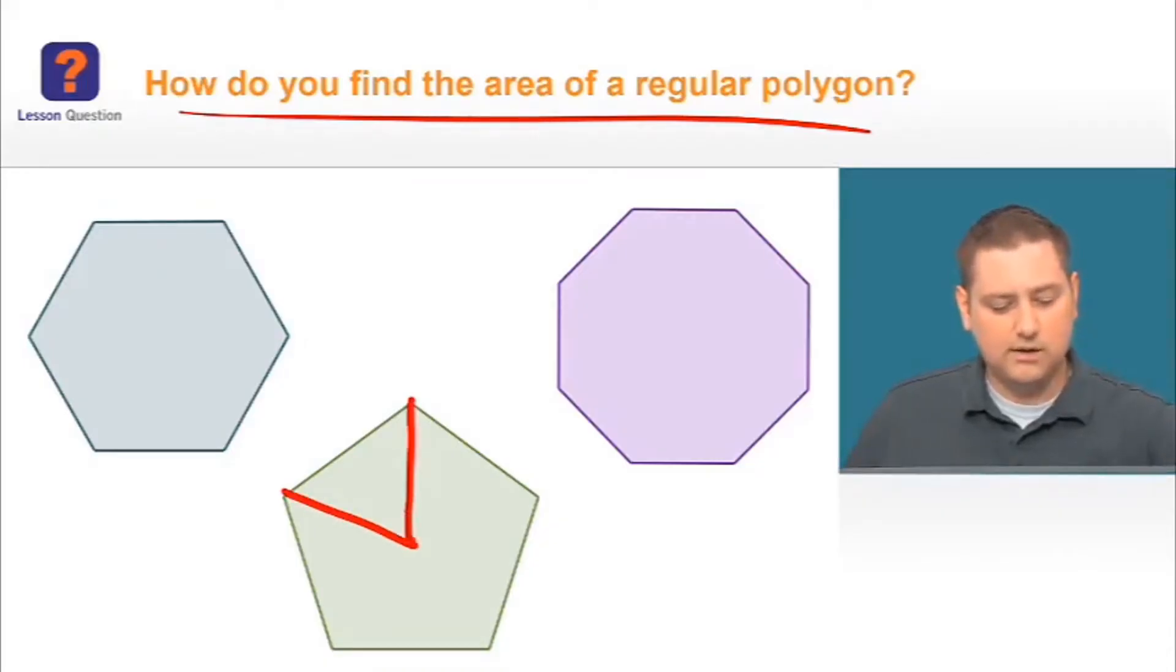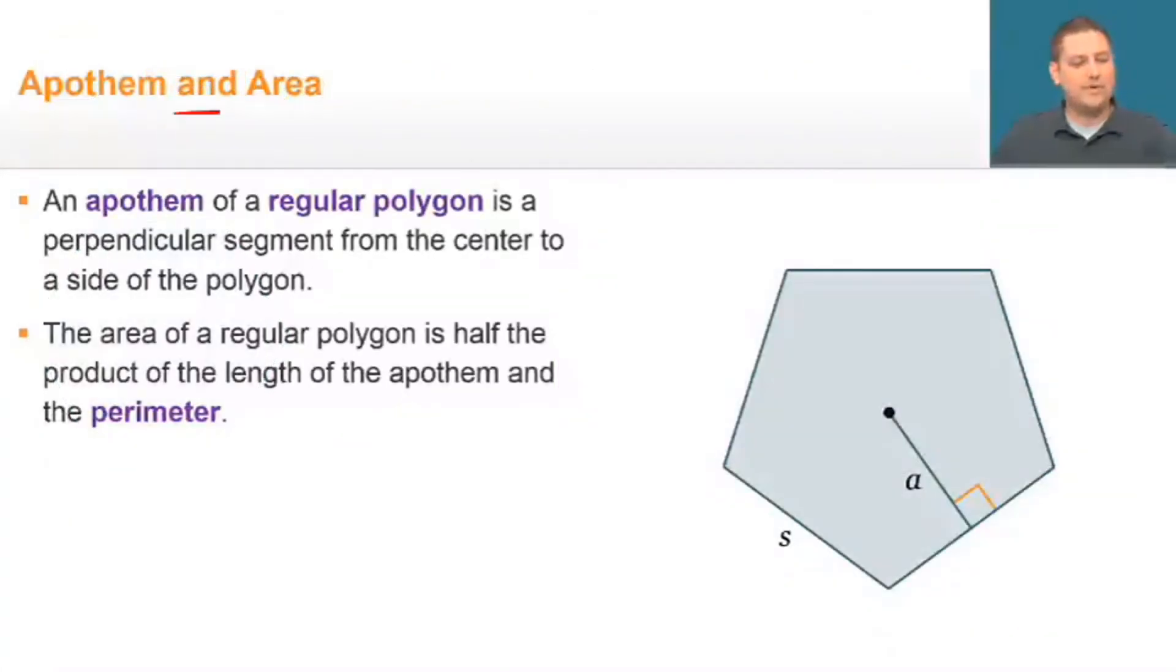During this geometry lesson, students will learn how to calculate the areas of regular polygons and solve real-world problems related to those calculations. Let's talk about apothem and area. Now, on the right, I have a five-sided regular polygon, which means that all of my side lengths are congruent to each other and the angles formed by those side lengths are also congruent to each other.